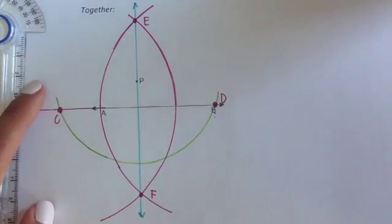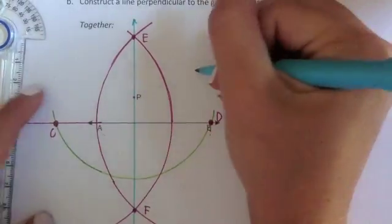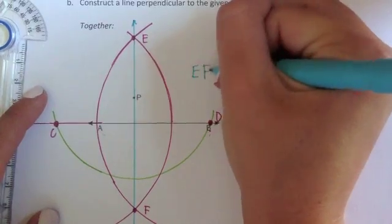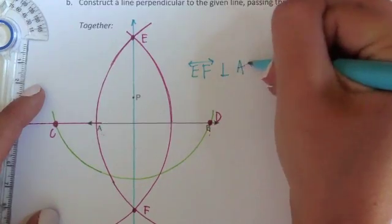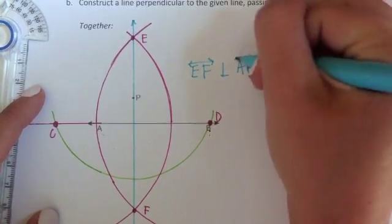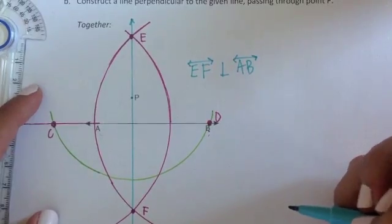And again we can make a conclusion here that line EF is perpendicular to segment AB, or to line AB rather, because remember it extends infinitely in both directions.